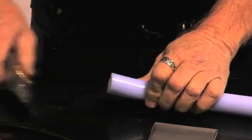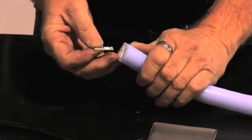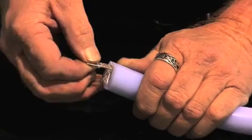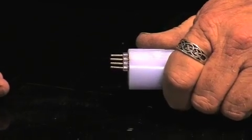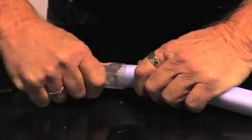RGB Neon Flex is cut and joined in the same manner as all Neon Flex. RGB Neon Flex is a color changing flex with controllers that are DMX controllable.